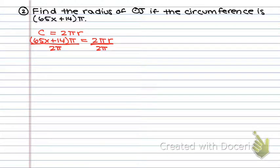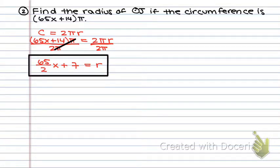Well, the pi's divide each other out. So now all I have to do is divide each piece by 2. 65X divided by 2 is just 65 over 2X plus 14 divided by 2 is just 7 equals R. And that's actually it. Because there's nothing more I can do, there's nowhere further I can go, my radius is represented by the expression 65 over 2X plus 7.